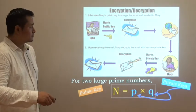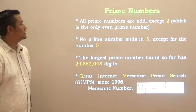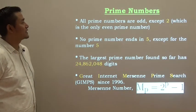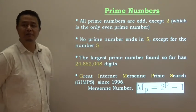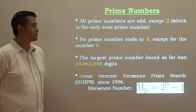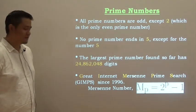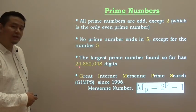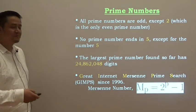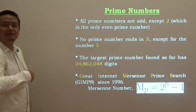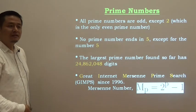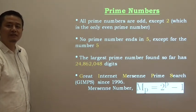Some common facts about prime numbers: All prime numbers are odd, except 2, which is the only even prime number. No prime number ends in 5, except for the number 5 itself. The largest prime number found so far has 24,862,048 digits. To factorize out this much big numbers will take a lot of time. That is the way security is established.